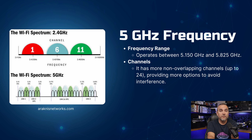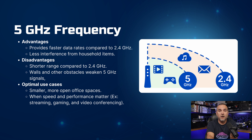5 gigahertz operates within a frequency range of 5.150 gigahertz to 5.825 gigahertz. It offers up to 24 non-overlapping channels, which allows for more choices to prevent interference. 5 gigahertz offers advantages such as faster data rates than 2.4 gigahertz and less interference from household items. The disadvantages are a shorter range compared to 2.4 gigahertz and a weakened signal through walls and obstacles.